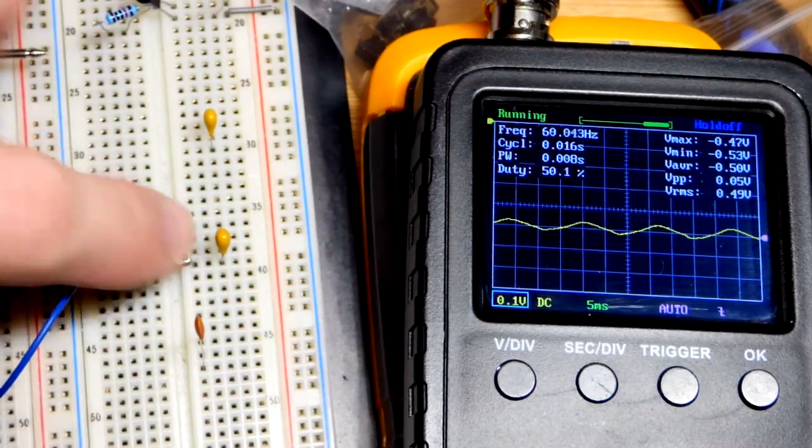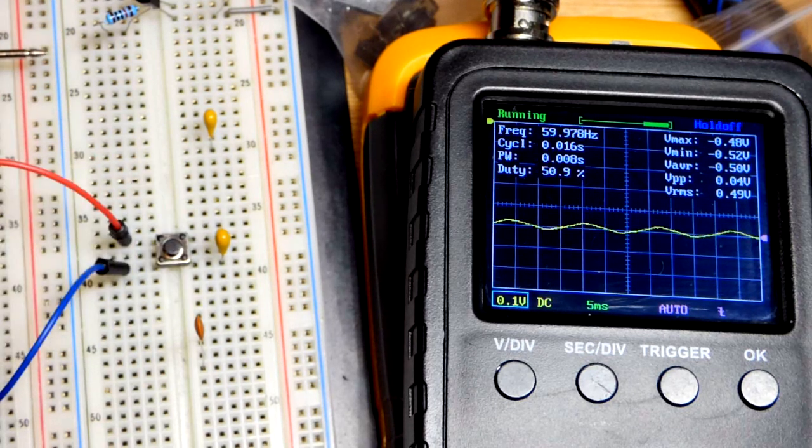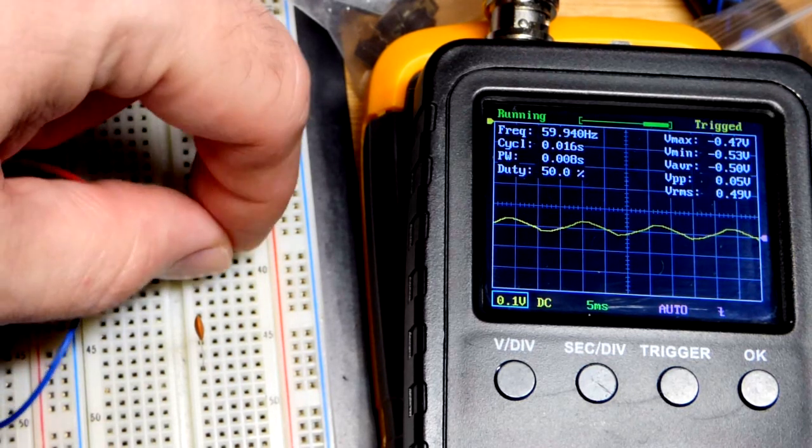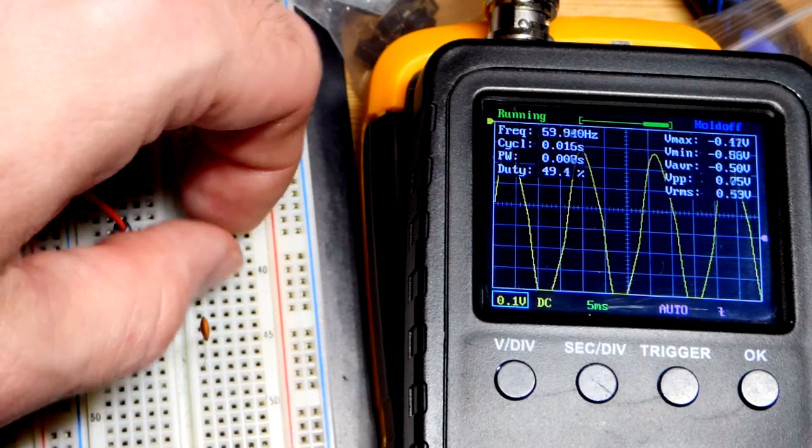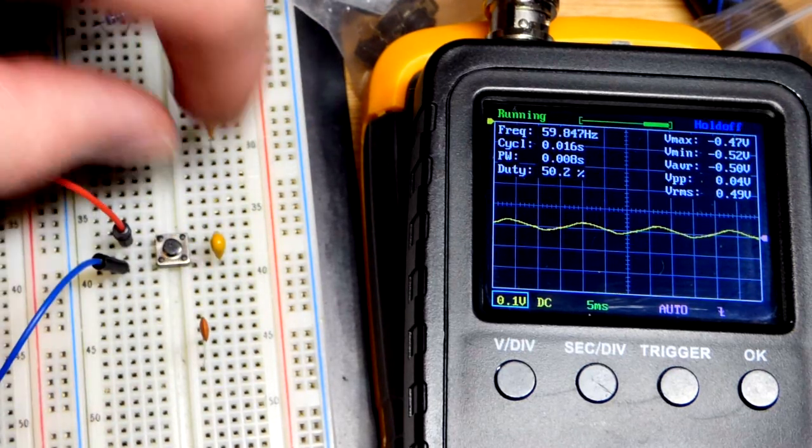Now, again, we close the switch, it smooths out. So it smoothed it out a lot. I can add to it still a bit, especially if I touch the metal. It really adds to it. Now, let's step up the capacitance.